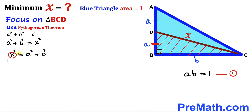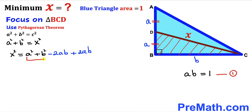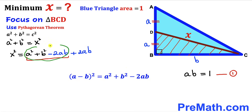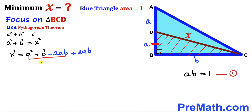Since we want the minimum value of x, we manipulate the right-hand side. We subtract 2ab and add 2ab simultaneously — these add up to zero, so the value is unchanged. Now we focus on the part a squared plus b squared minus 2ab. Recalling the identity: (a minus b) squared equals a squared plus b squared minus 2ab, we apply this identity, giving us x squared equals (a minus b) squared plus 2ab.